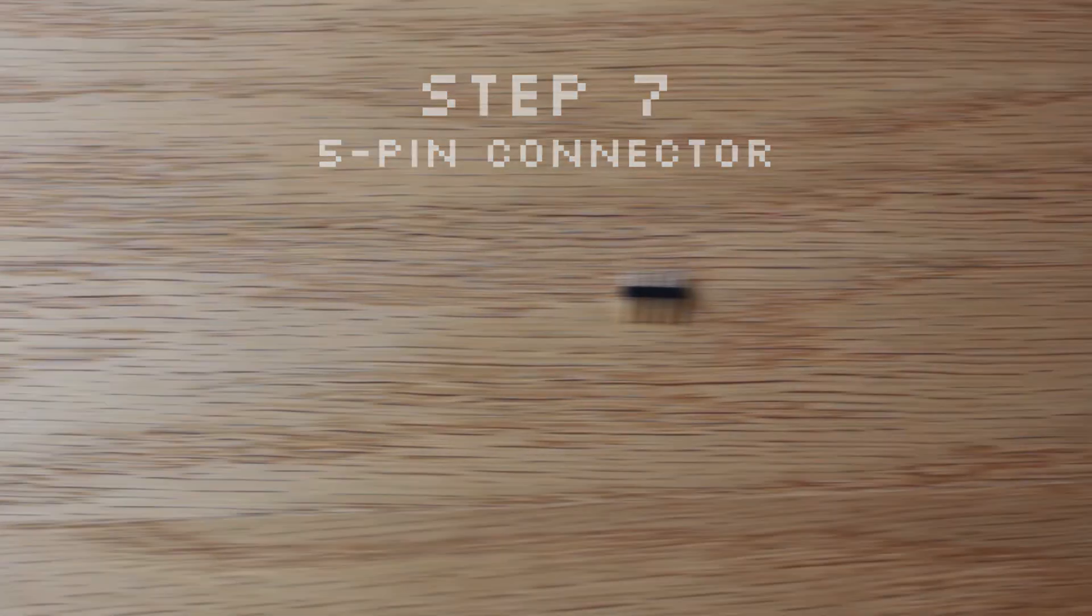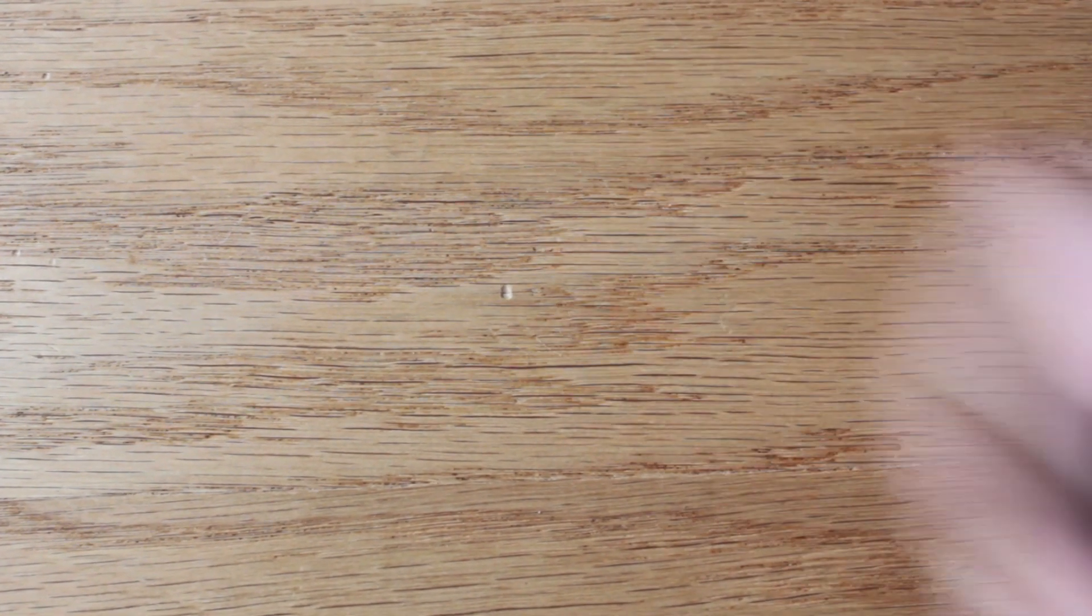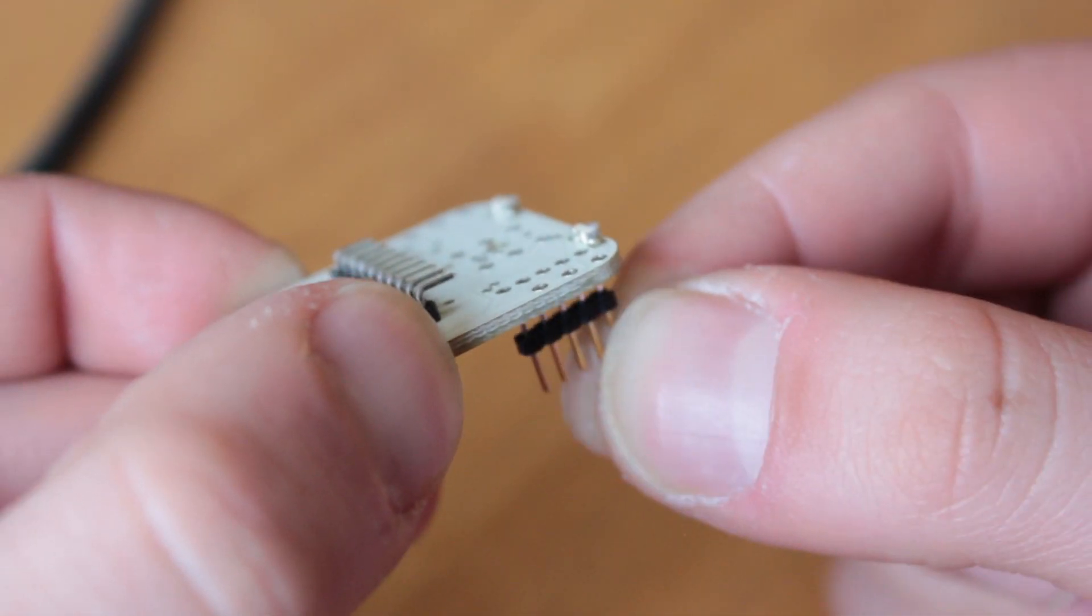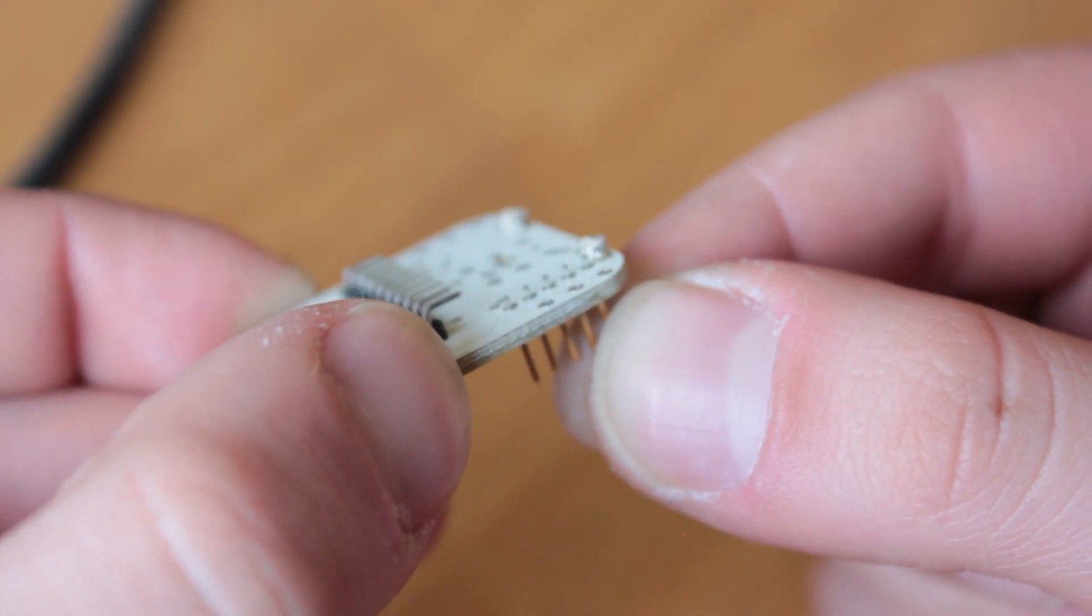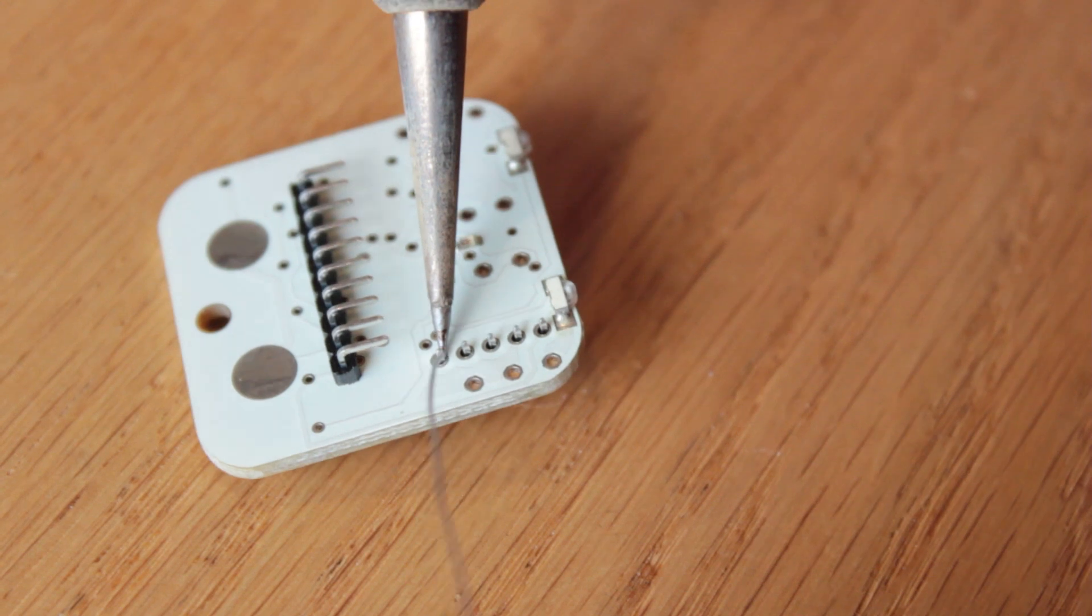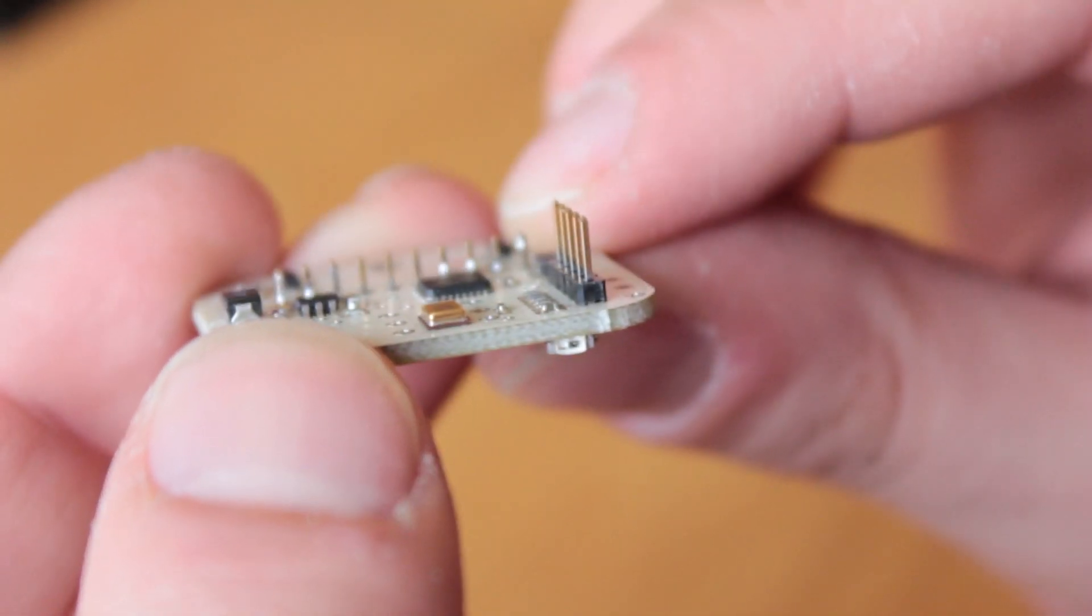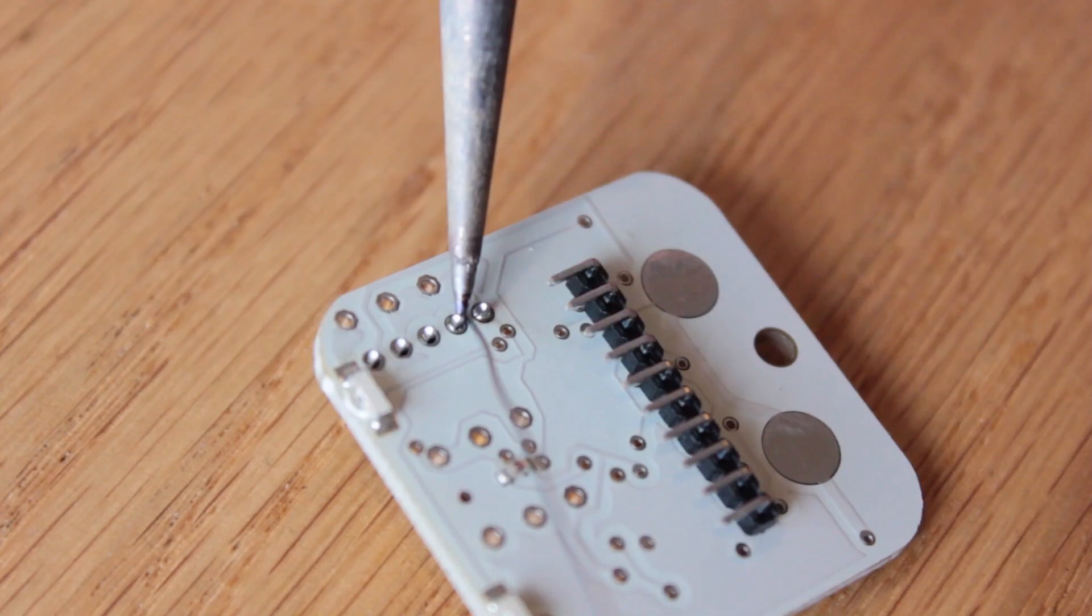Step seven is for the 5-pin connector. Insert this piece from underneath. All you have to make sure is that the longer prongs are pointing down. Same as before. Solder one point first, inspect that it's straight, and then finish the other points.